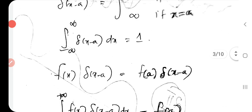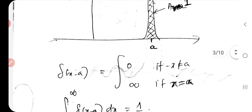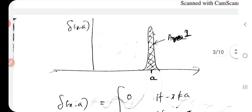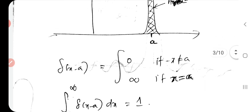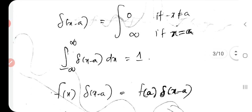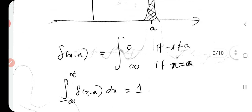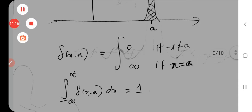So this is how we define the Dirac Delta function and its key properties.